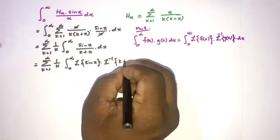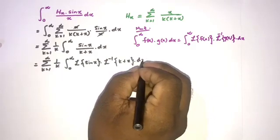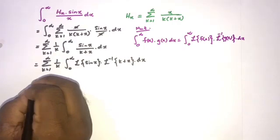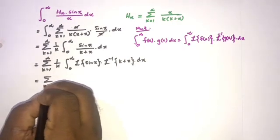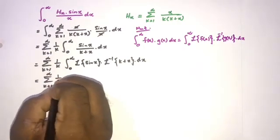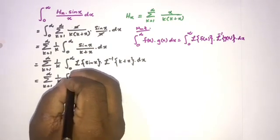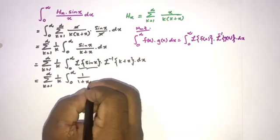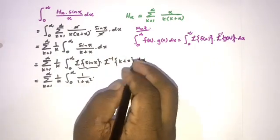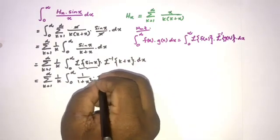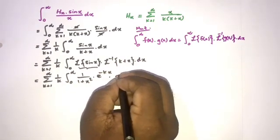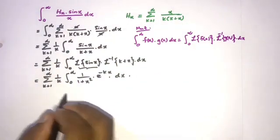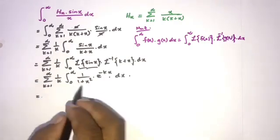We know the Laplace transform of sin(x) is 1 over (1 plus s²). So inside the sum from k equals 1 to infinity of 1/k, we have the integral from 0 to infinity of 1 over (1 plus x²) times the inverse Laplace transform of 1/(k+x), which is e^(−kx). So we get the integral from 0 to infinity of 1/(1+x²) times e^(−kx) dx.